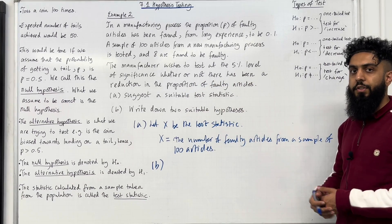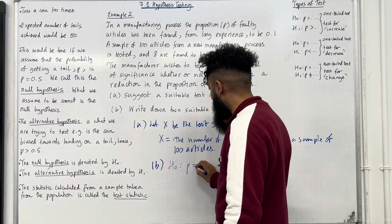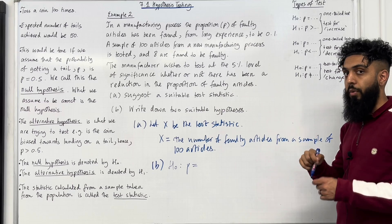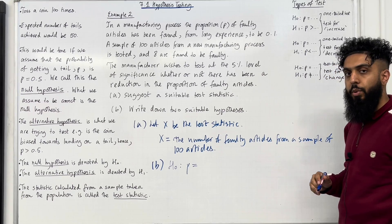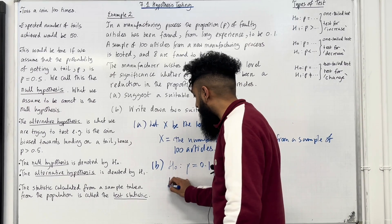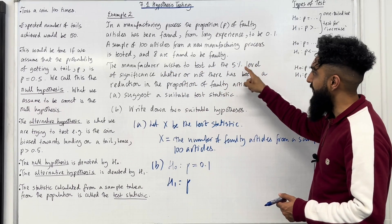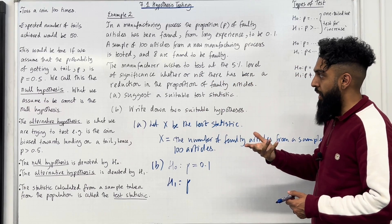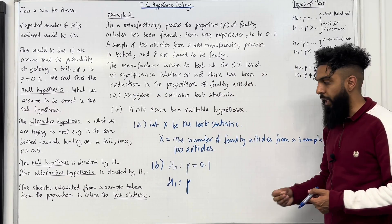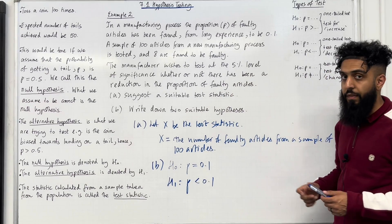Part B: write down two suitable hypotheses. For the null hypothesis, H₀: P = 0.1, since the proportion of faulty articles has been found from long experience to be 0.1 — we assume P equals 0.1. For the alternative hypothesis, H₁: the manufacturer is testing for a reduction in the proportion of faulty articles, so we are testing for a decrease in P. Therefore, H₁: P less than 0.1. That completes Part B of Example 2.